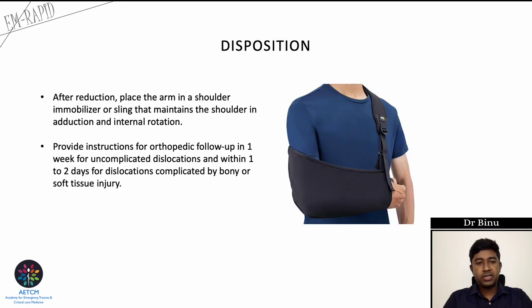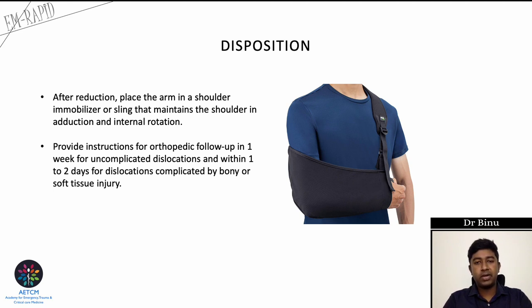For disposition after reduction, place the arm in a shoulder immobilizer or sling maintaining adduction and internal rotation. Provide instructions for orthopedic follow-up within one week for uncomplicated dislocation, and within one to two days for dislocations complicated by bony or soft tissue injury.